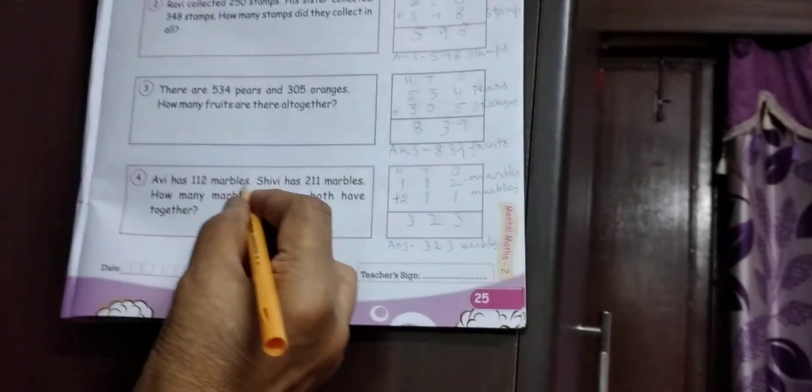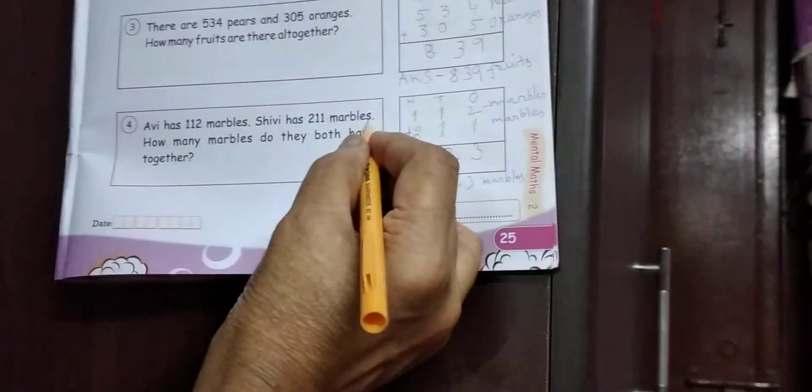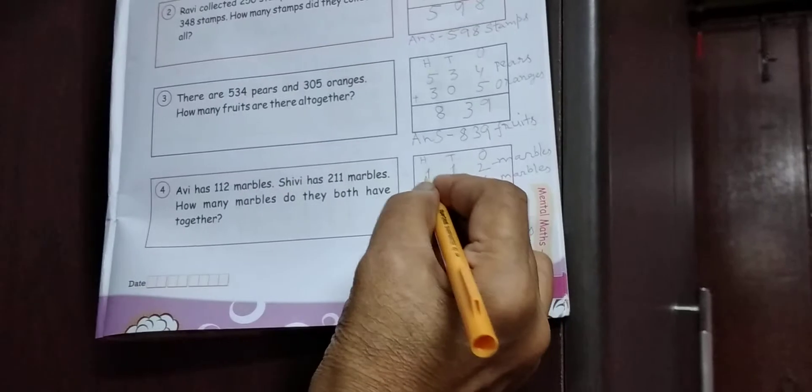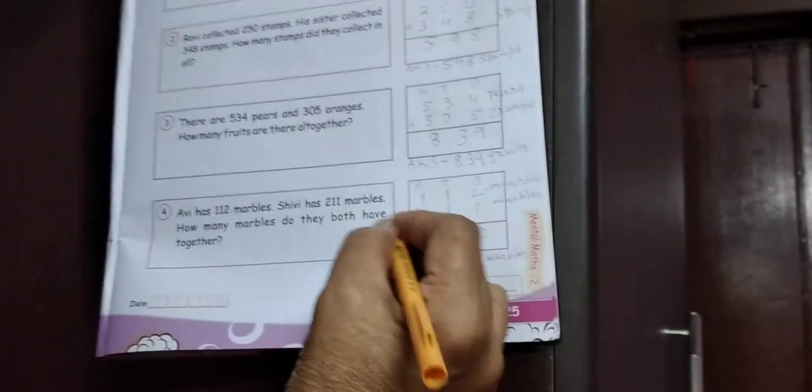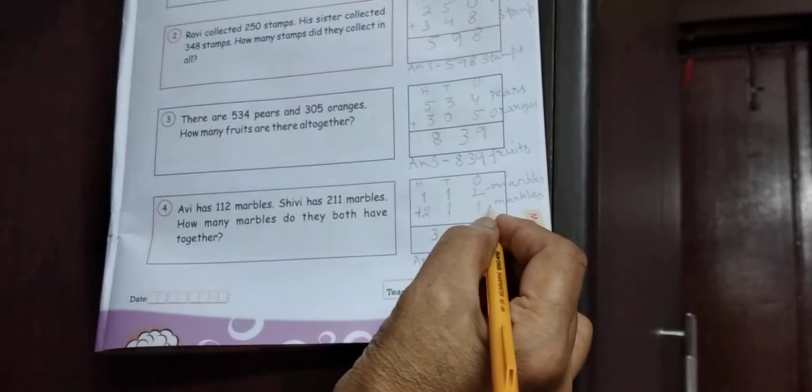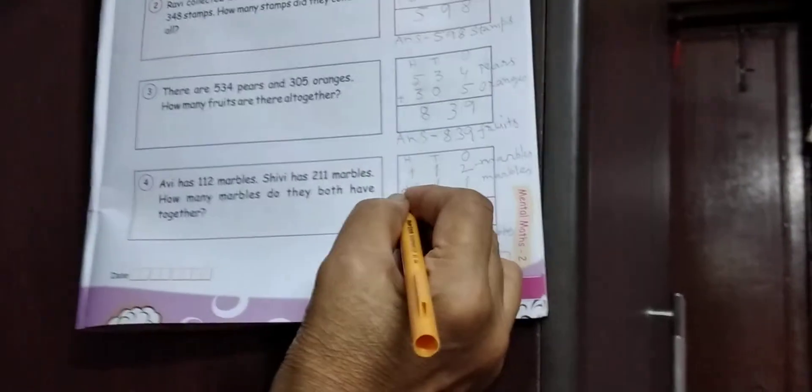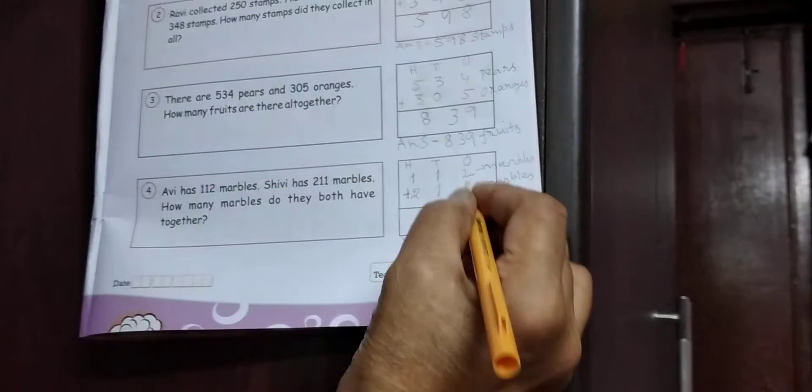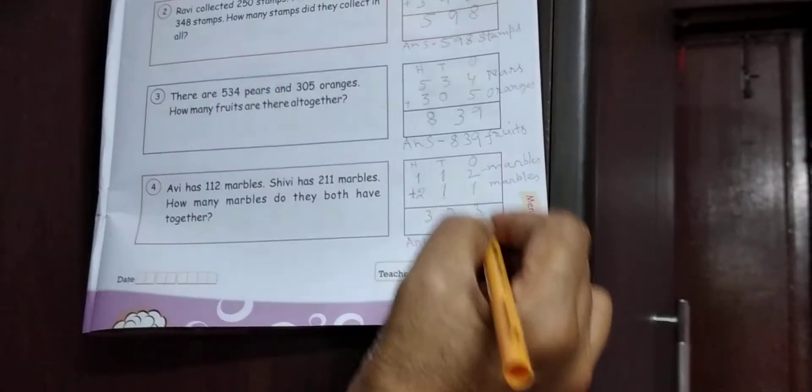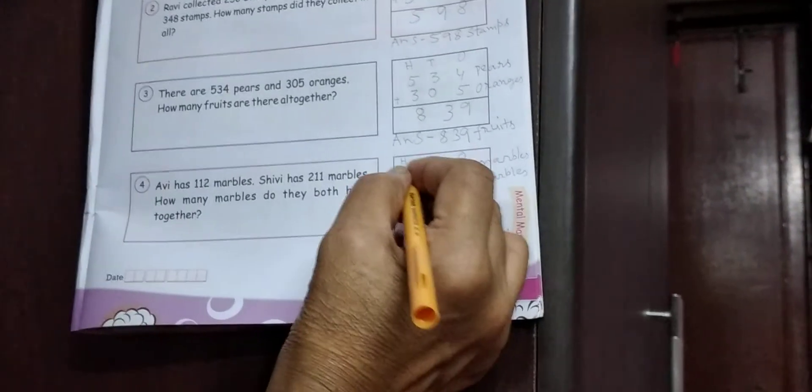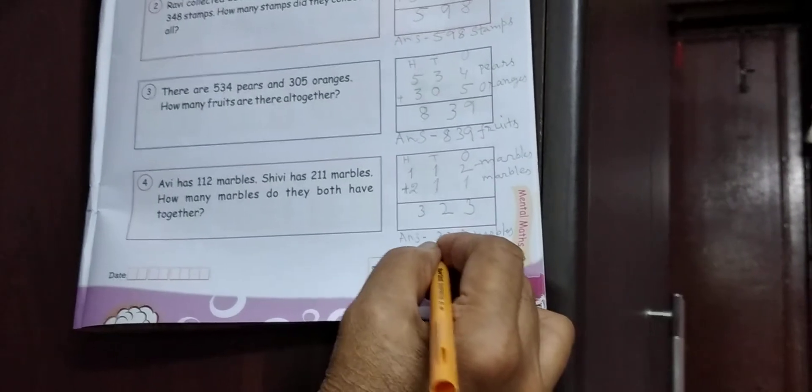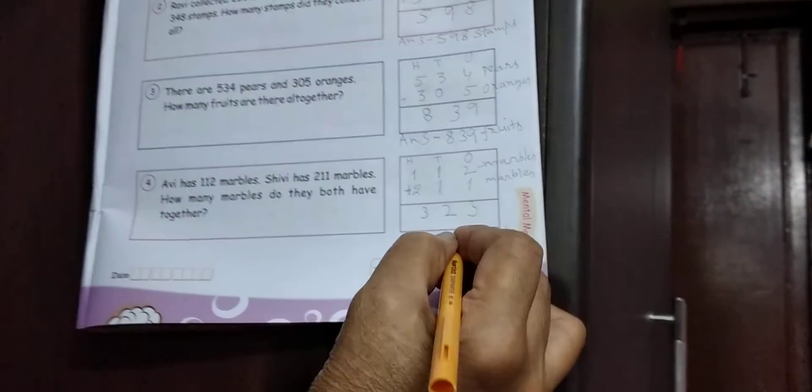Next, Obhi has 112 marbles. Shibi has 211 marbles. How many marbles do they both have together? Obhi ko paas 112 marbles hai? Shibi ko paas 211 marbles hai? Ek sat me addition karo. Kitna huwa? 2 are 1 or 2 mein 3. 1, 1, 2. 2 are 1 mein 3. Answer 323 marbles.